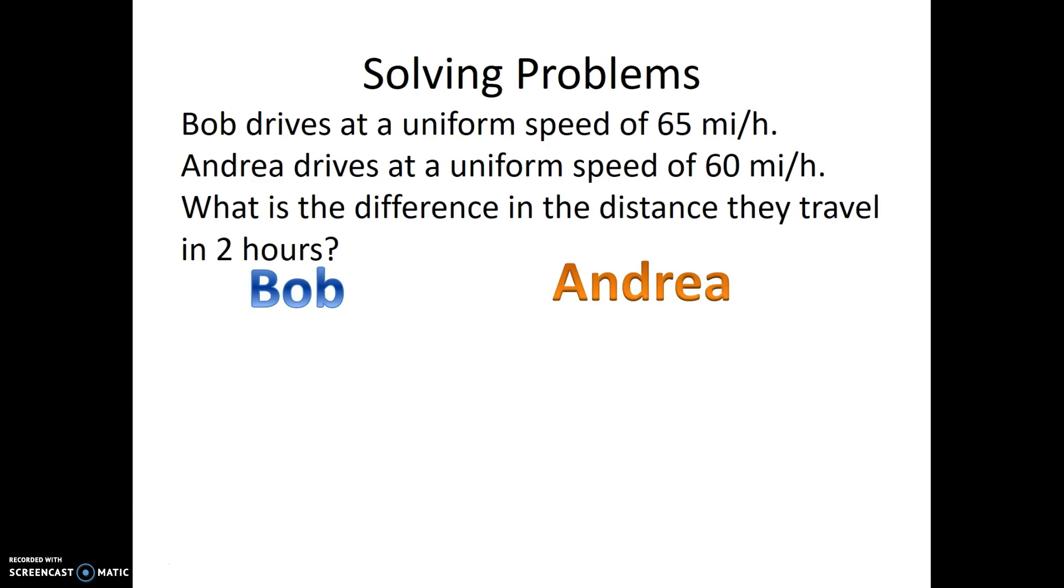Let's start by labeling our problem. It says up here that Bob drives at 65 miles per hour, so let's label that speed Bob. And Andrea drives at a uniform speed of 60 miles per hour, so let's label that speed Andrea. What is the difference in the distance they travel in two hours? So there's my time right there.